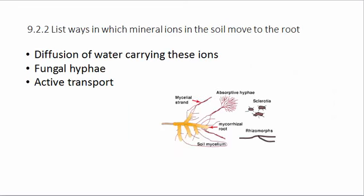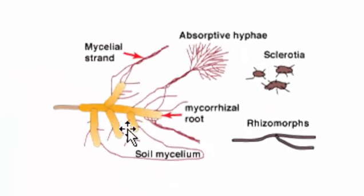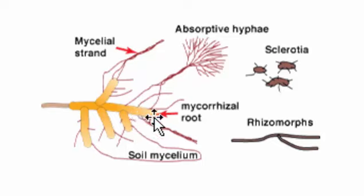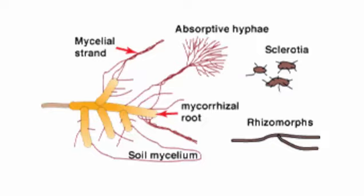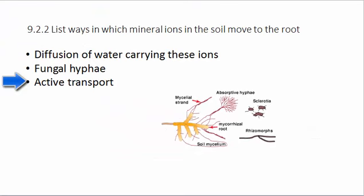9.2.2 states: list ways in which mineral ions in the soil move to the root. First, when water gets absorbed into the root, there are ions dissolved in the water, so you have diffusion of water which carries these ions into the root. Another way is fungal hyphae associated with the roots — that's called mycorrhizae — which branches out and increases the absorption of nutrients, ions, and water from the soil. Mineral ions can also be absorbed through active transport.